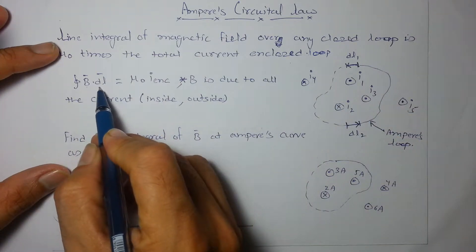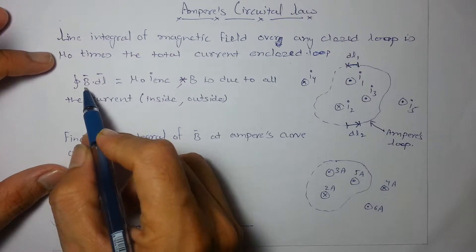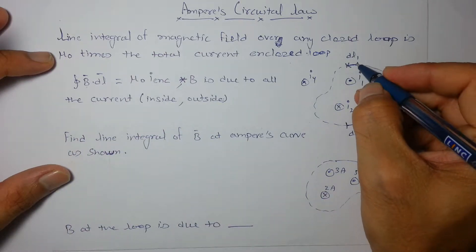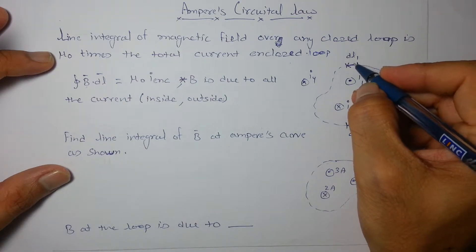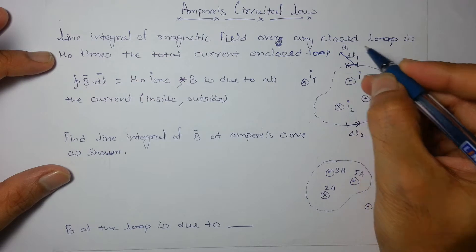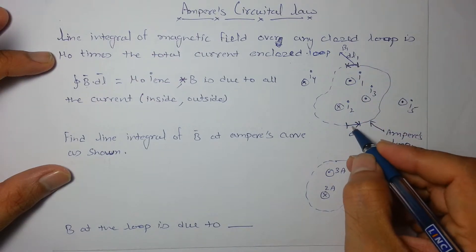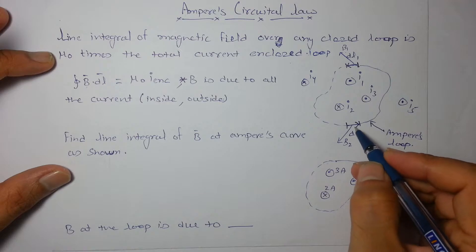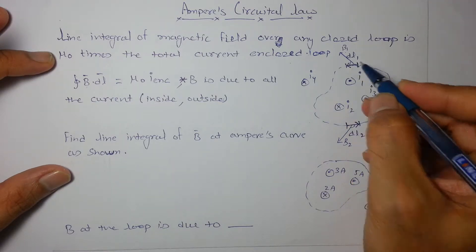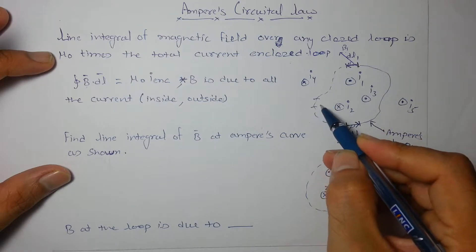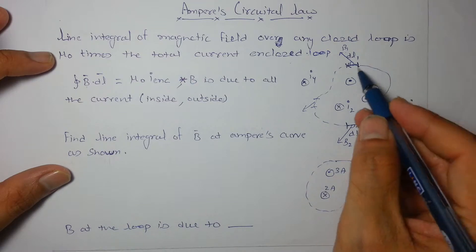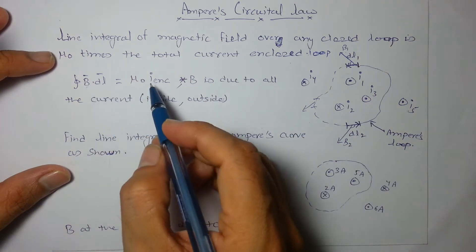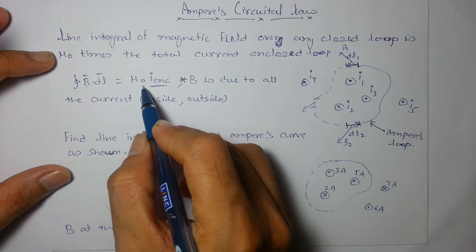Line integral is nothing but the integral of magnetic field (magnetic flux density) over the loop. At each point on the loop, due to all the currents, there is a net magnetic field. We take B1 dot dl1, and similarly at other points the dot product may be negative or positive. Summing all these small B dot dl values over the complete loop gives us the line integral, which equals mu-naught times I enclosed.